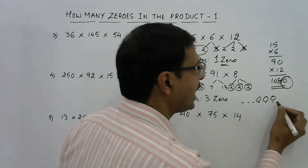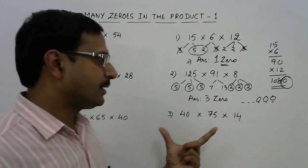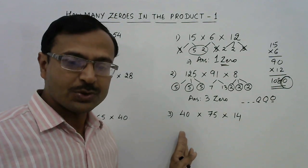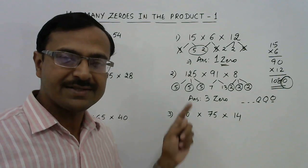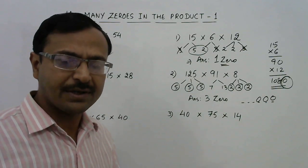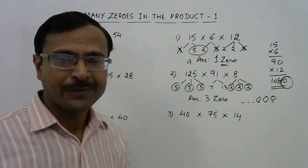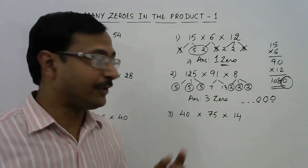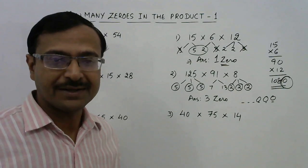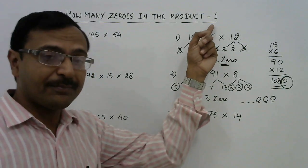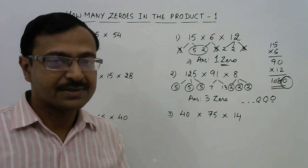The answer will be a number ending with three zeros at the end. In the third question we again have a similar kind of setup. You may sometimes have four, five, ten, or fifteen numbers in the product, but for a greater count of numbers there are separate rules — that is why I am taking this as Part 1, and in Part 2 I will discuss that important trick.